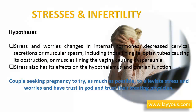Psychological causes might affect premature ejaculation or erectile dysfunction. The best psychological support for the male is from his wife. In women, psychological factors affect sexual function and ovulatory failure. In some societies, females may find problems with proper sexual intercourse related to upbringing, and psychotherapy is helpful in these cases. Some hypotheses suggest that stress and worries may cause significant changes in internal hormones, such as decreased cervical secretions or muscular spasm, including in those lining the fallopian tubes causing obstruction, or muscles lining the vagina causing dyspareunia. Stress also has effects on the hypothalamus and ovarian function.